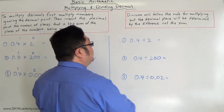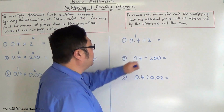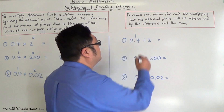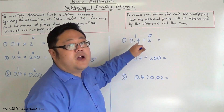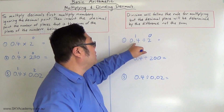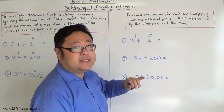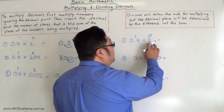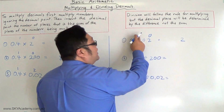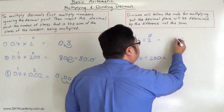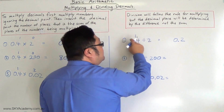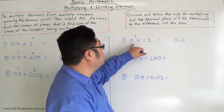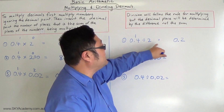For this example, you've got one decimal place in 0.4, and you're dividing by 2 which has no decimal places. So your answer will have one decimal place. 4 divided by 2 is 2, giving you 0.2 — one decimal place.